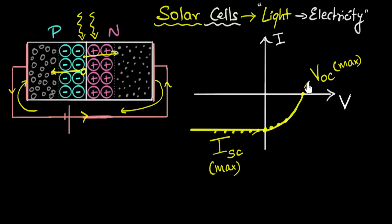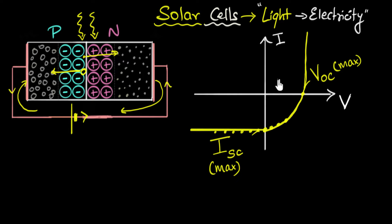To go beyond the open-circuit point I need a positive current, which a solar cell alone can't provide. I have to forward bias the diode by adding a battery, and then I get a forward current that rises sharply — the familiar forward-bias exponential curve. This overall graph should look familiar: it is very similar to a normal P-N junction VI characteristic, except it has been shifted downward. The more light you shine, the more the entire curve shifts down.